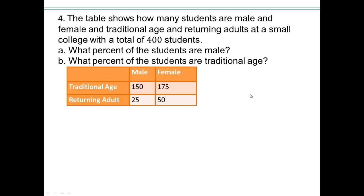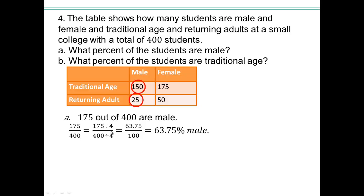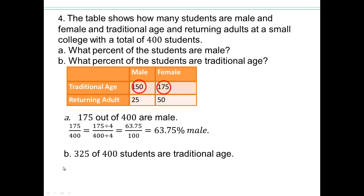A table shows male and female students of traditional age and returning adults, with 400 total students. You're asked: what percent of students are male, and what percent are traditional age? For male students, add them together — that's 175 students out of 400. We do 175 over 400 and reduce it to get 63.75%, so 63.75% are male students. For traditional age, add those two numbers — 325 out of 400 are traditional age. Do the division and you have 81.25% of students are traditional age.